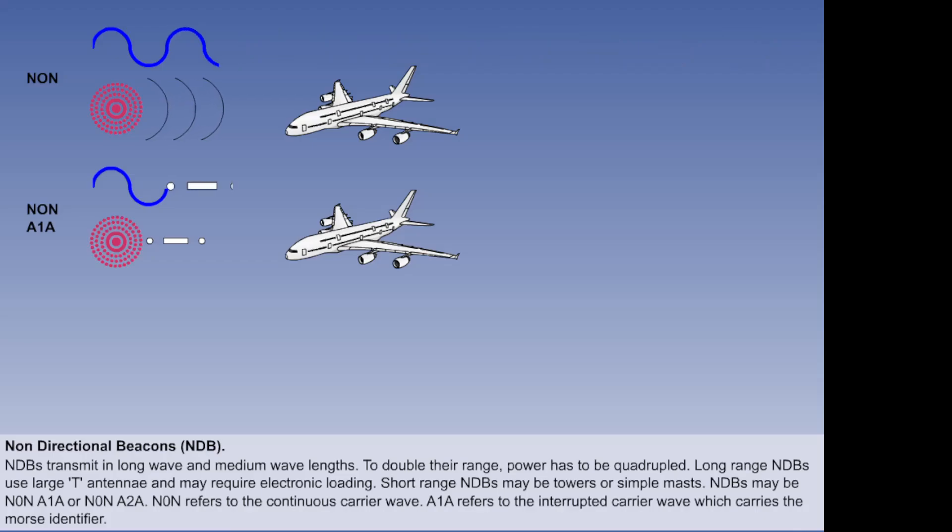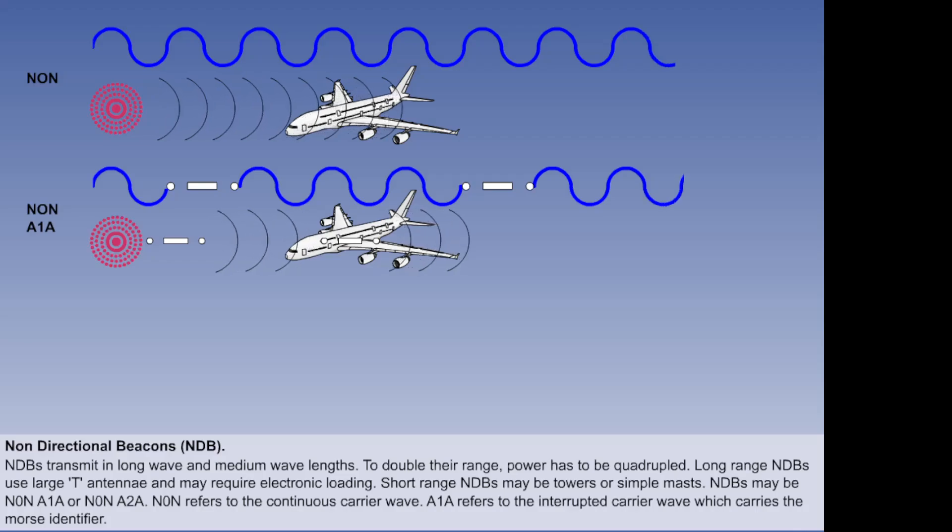The A1A part of the signal periodically replaces the N0N transmission and, being an interrupted carrier wave, is used to carry the three-letter Morse identifier of the NDB. N0N A1A beacons are normally used with high power outputs for long range NDBs.